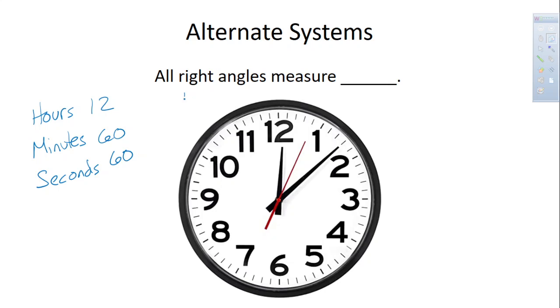So remember that a right angle is one quarter of a circle. So the circle is 12 hours, so the right angle is how much? 12 divided by 4. 3 hours. Or we could do minutes. A right angle is 60 divided by 4, that's 15 minutes. Or we could say seconds, that's 15 seconds. But we could measure angles with a clock, in three different ways in fact.